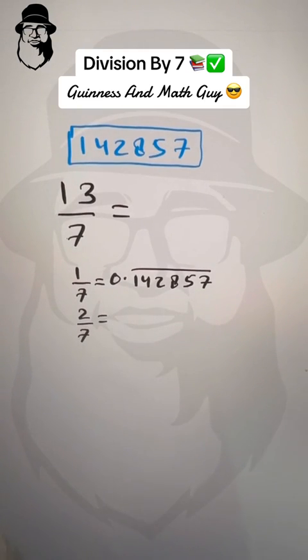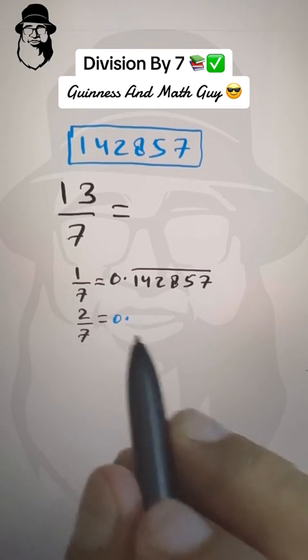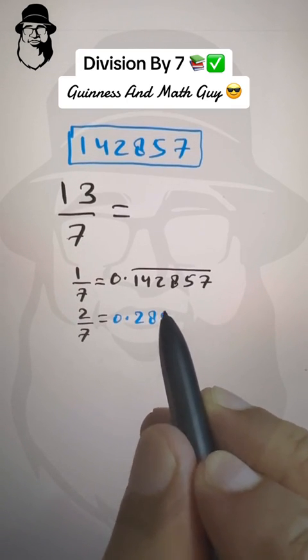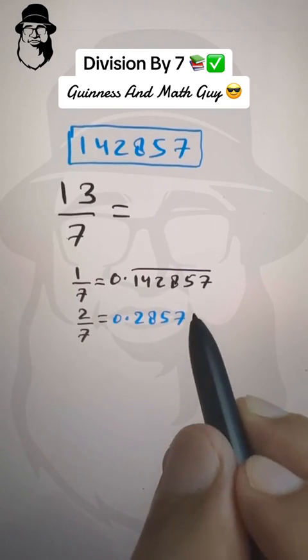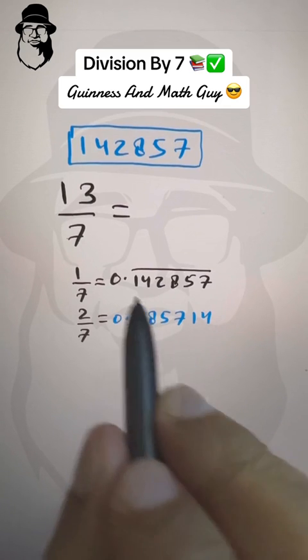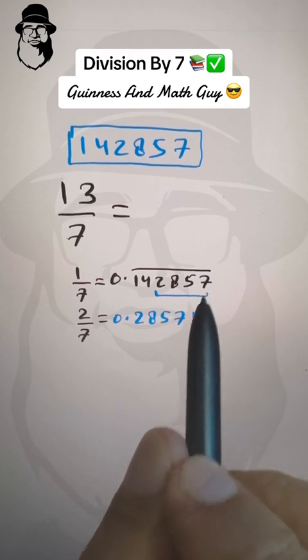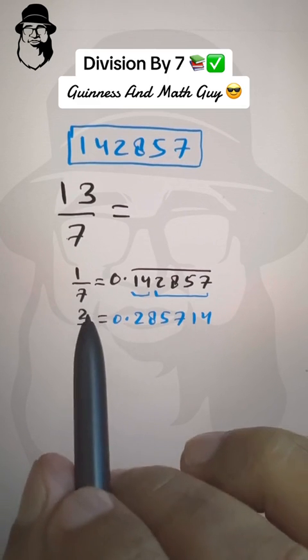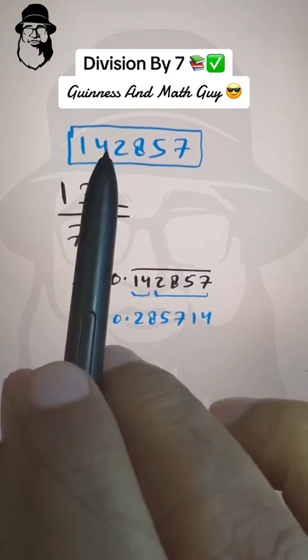And here, 0 point. Now it's 2, right? So you start with 2 here. 2, 8, 5, 7, and then come back to 1, 1, 4. It's the same digits, but you start from here. Write this and then this part. So for 1 and 2, you start with the same digit 1 and 2 in this sequence.